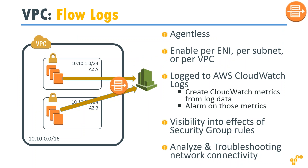The interesting point about flow logs is there is no agent — you don't have to install any agent in your network or in your server. It is completely agentless. As I mentioned, it can be at a network interface level, subnet level, or VPC level. All the logs are sent to AWS CloudWatch, which is the monitoring tool Amazon provides, and CloudWatch stores all the log data into an S3 bucket.